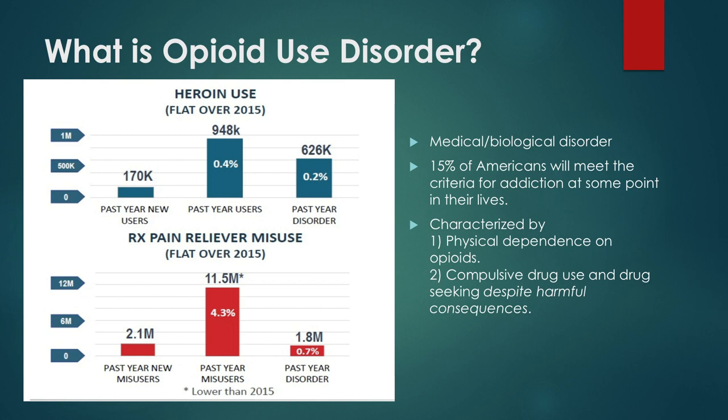The second defining characteristic is compulsive drug use and drug seeking despite harmful consequences. It's important to point out that we can engage in problematic behaviors without reaching the point of use disorder — if things are really going bad for our relationships, our ability to do our jobs, our personal health, and we can decide it's no longer worth it and stop, we haven't quite got to the use disorder problem yet.